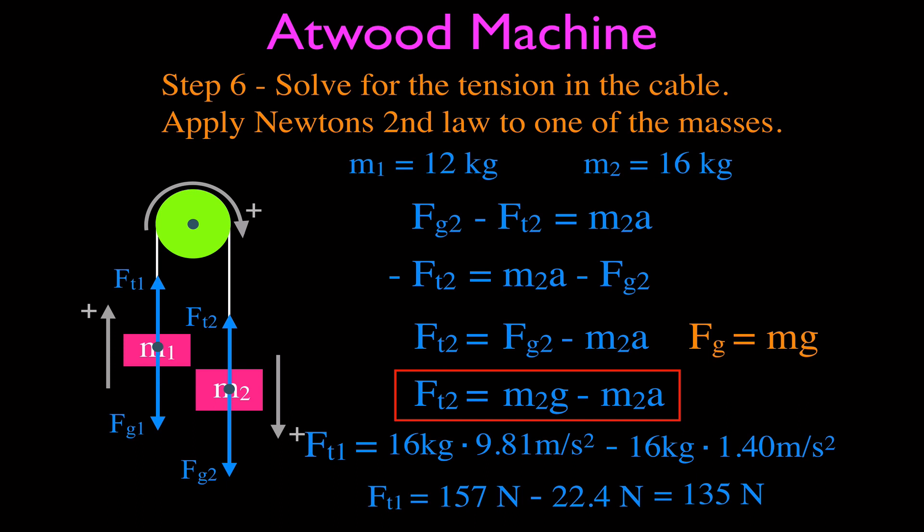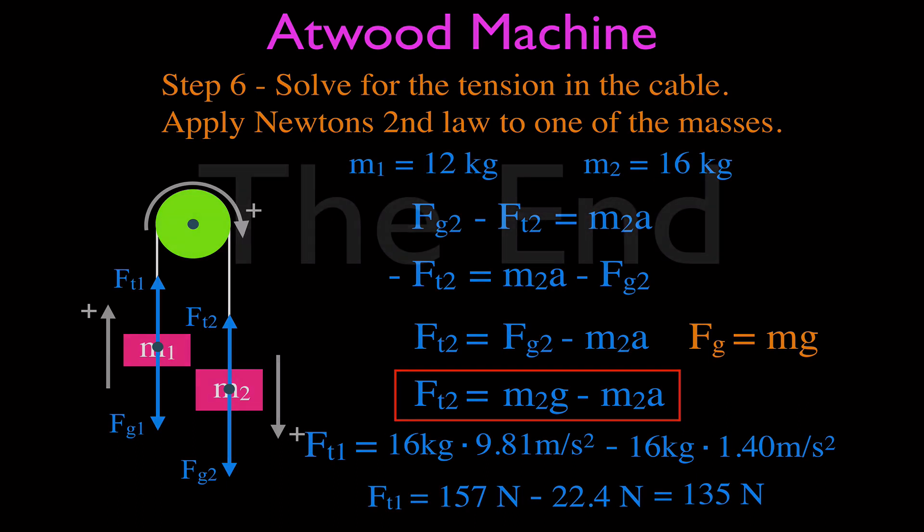That is how you solve the Atwood machine or elevator problem with two masses on a pulley. I showed you the steps: drawing the diagram, drawing free body diagrams, adding up forces, calculating the acceleration, and finding the tension in the cable. Thank you very much for watching. If you found the video helpful, please subscribe, give a thumbs up, leave a comment, and share with your friends.